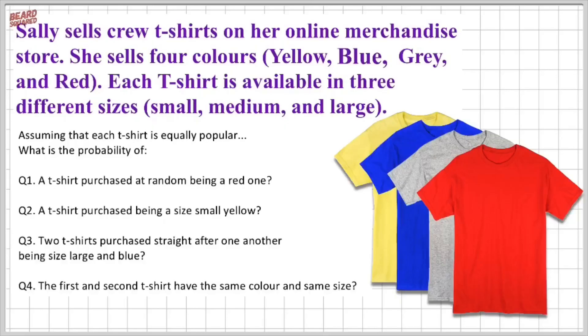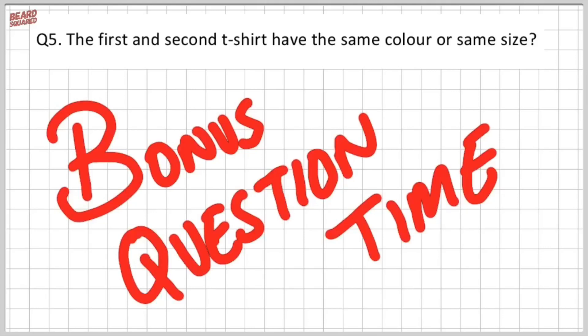So the prompt to the original question was that Sally sells crew t-shirts on her online merch store. She sells four colors: yellow, blue, gray, and red, and each of the t-shirts are available in three different sizes, so small, medium, and large. So in this bonus round, we're going to be answering the following question that says the first and second t-shirt have the same color or the same size.